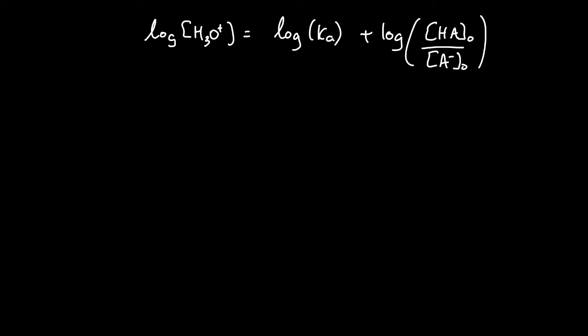We can multiply everything by minus 1. And if we multiply everything by minus 1, we get the negative log of H3O plus. And remember, that's just the pH. And on the right-hand side, if we multiply by negative 1, we get the negative log of Ka.